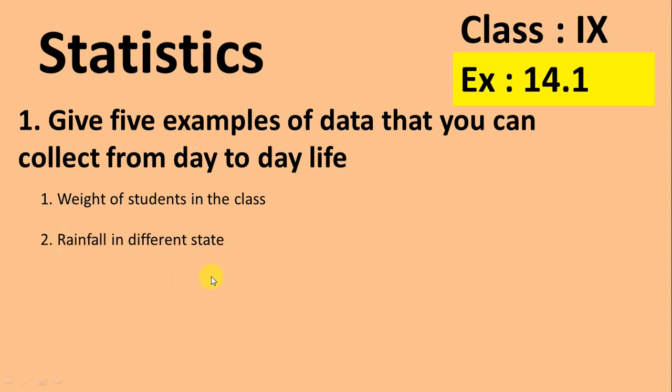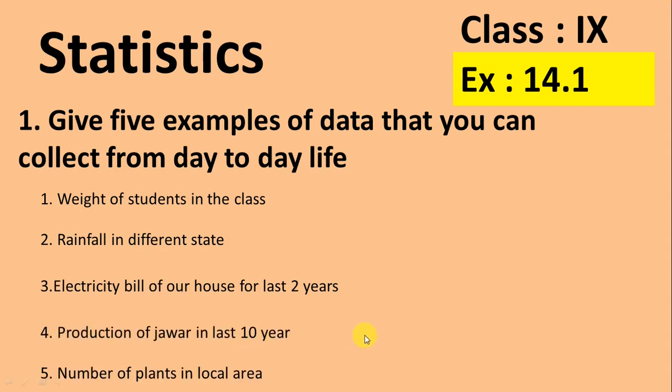The next one is electricity bill of your house for the last two years. Next, the production of jawar in last 10 years. Number five is number of plants in local area. These are the five examples.